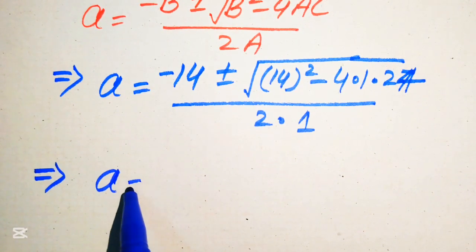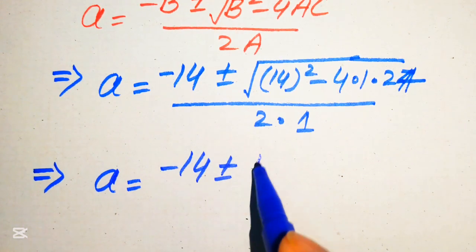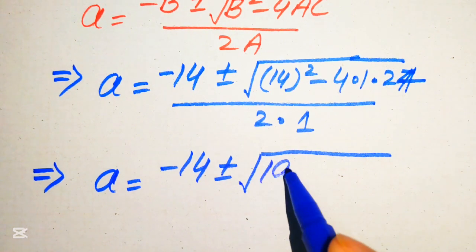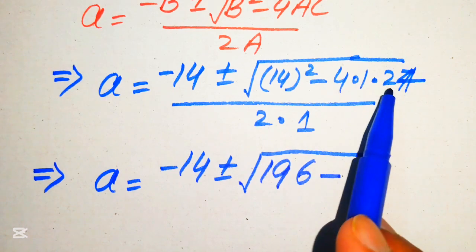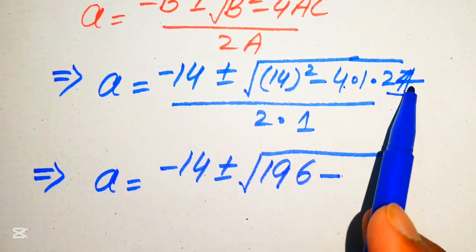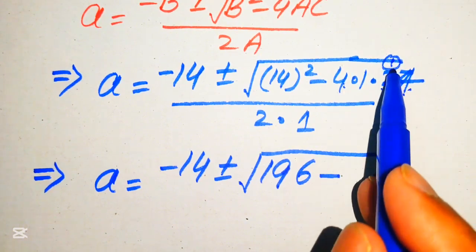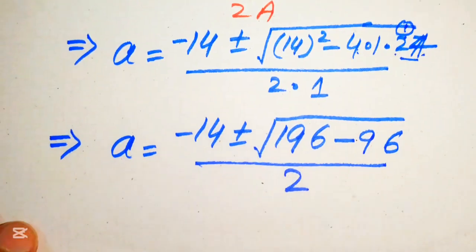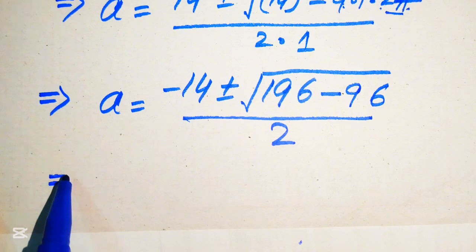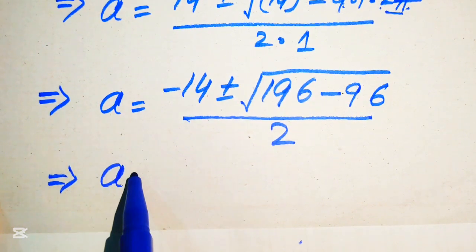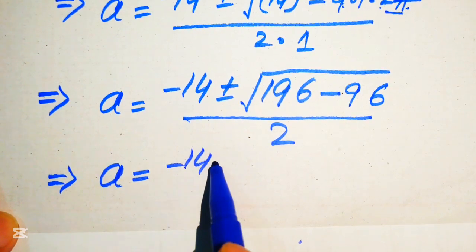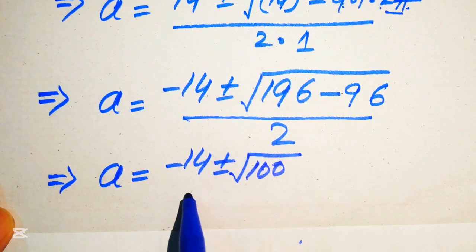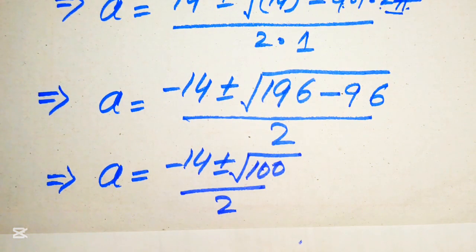Here, 14² = 196, and 4 × 24 = 96. So we get a = (−14 ± √(196 − 96)) / 2 = (−14 ± √100) / 2.